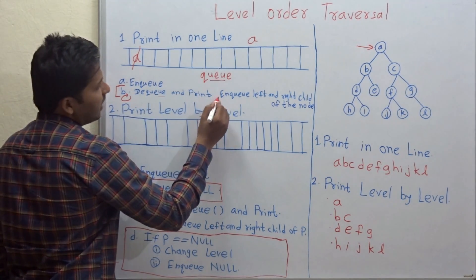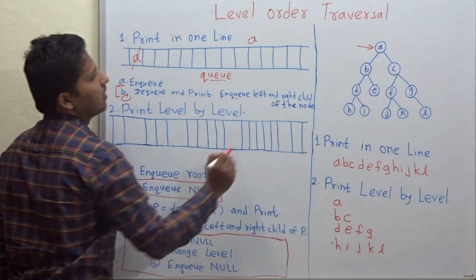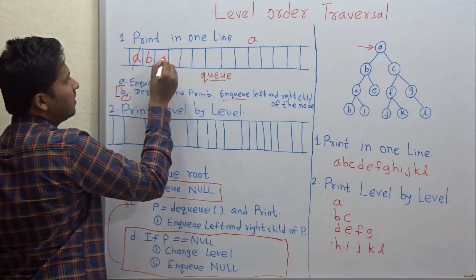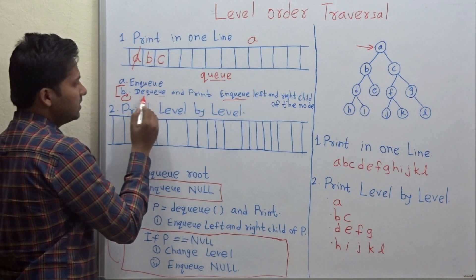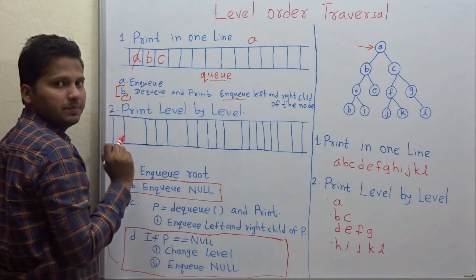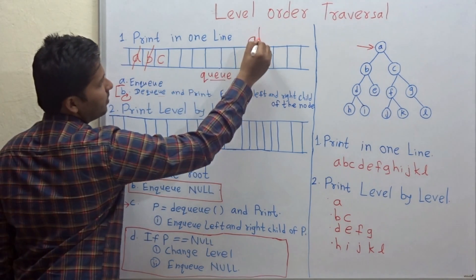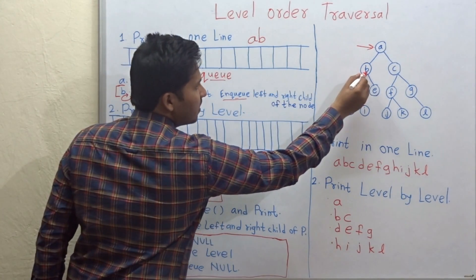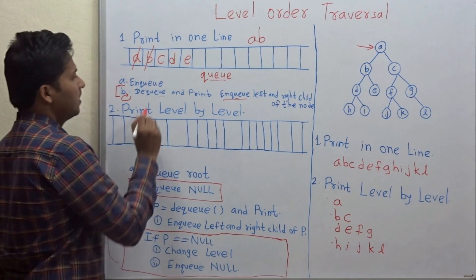Now the next step says dequeue and print, then enqueue the left and right child of the node. So we dequeue A and print A. The left child of A is B and right child of A is C, so we enqueue them. This step is in a loop which will continue until the queue is empty.